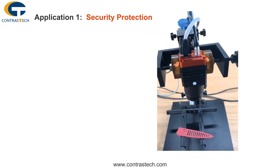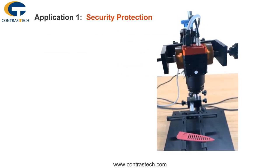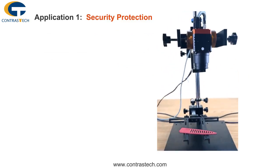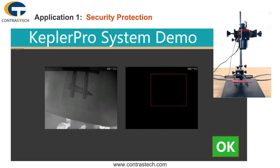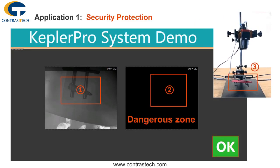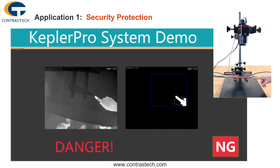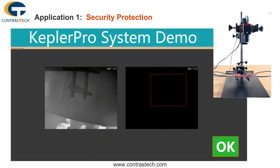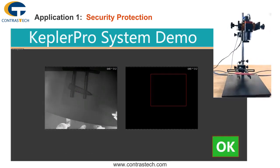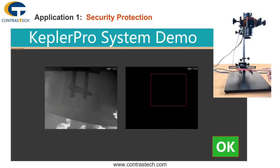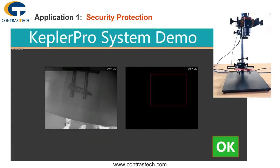In operation workshops or dangerous areas, the camera detects whether there are target-triggered behavior rules in the scene under test. When target-triggered rules are met, the device performs linkage actions — such as triggering an external alarm as a warning or stopping equipment operation when necessary — to reduce casualties.